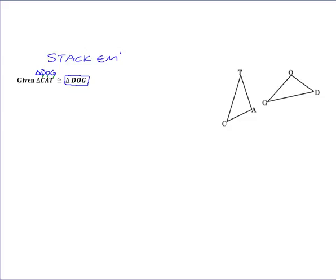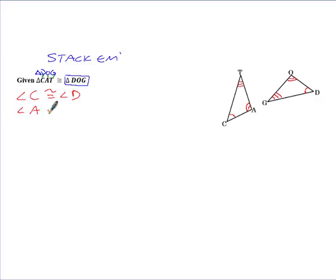So when I say D matches with C, that just means angle C is congruent to angle D, and we mark the angles as congruent. That also means angle O is congruent to angle A — I'm going to use double marks here to indicate the difference between this angle and that angle, because if I just keep using one mark, it all looks the same. And then finally, angle G is congruent to angle T, and we'll use three little marks there.